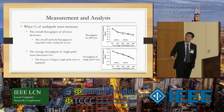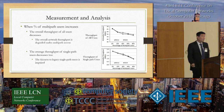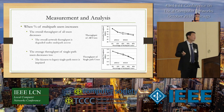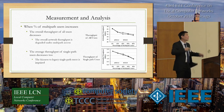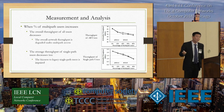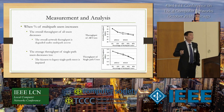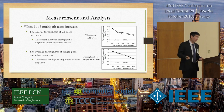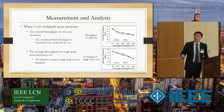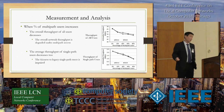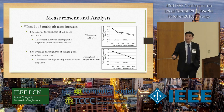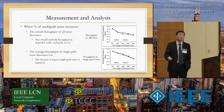We measured the throughput of the devices. Looking at the top figure, when the percentage of multipath users increases, the summed throughput of all users keeps decreasing, meaning overall network performance is reduced under multipath access. Looking at single-path users, the pattern is similar — the more multipath users there are, the lower average throughput single-path users obtain. So fairness to those users is also impaired.